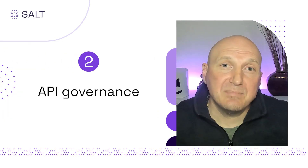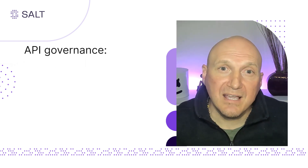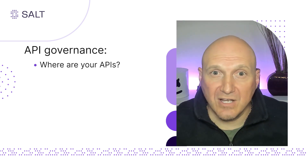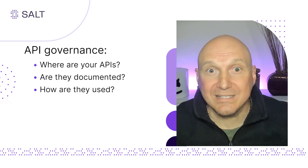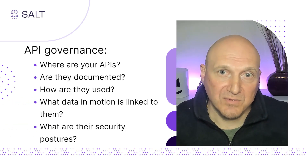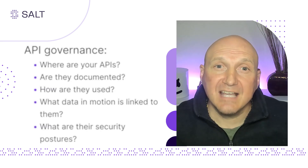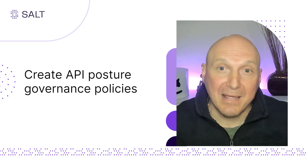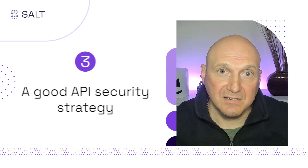Second is API governance. It is important to know where your APIs are in your organization, if they're documented, how they're used, what data in motion is linked to them, and the security posture of those APIs. It is crucial to take the time to create, document, and mandate corporate API posture governance policies.